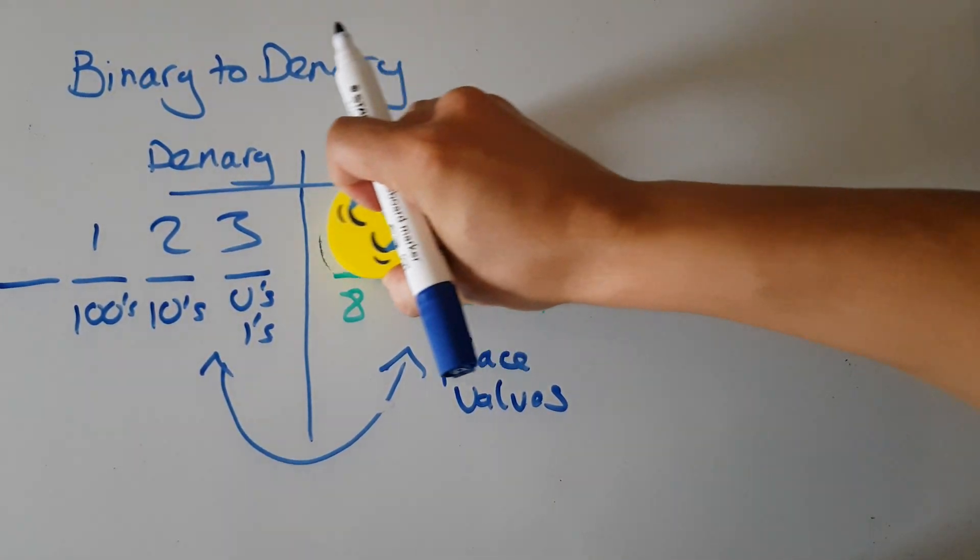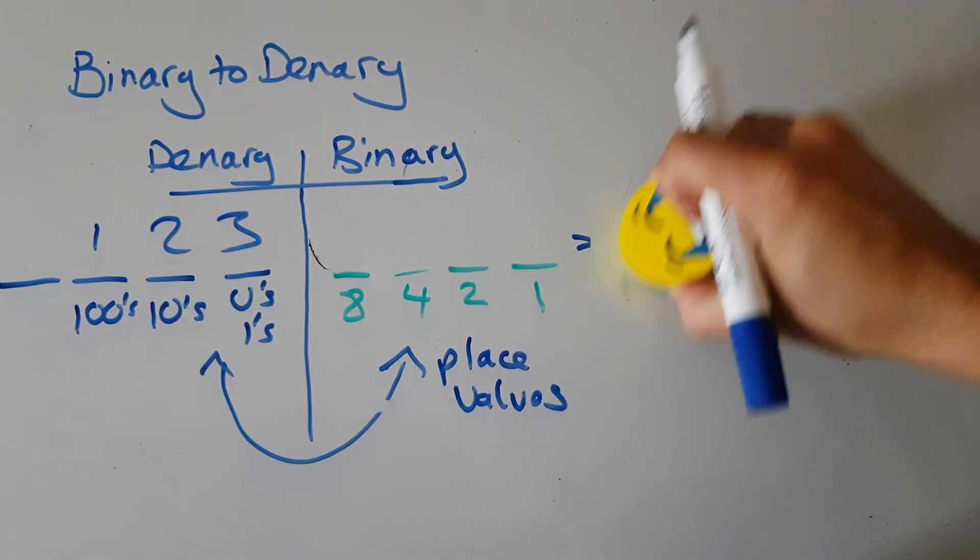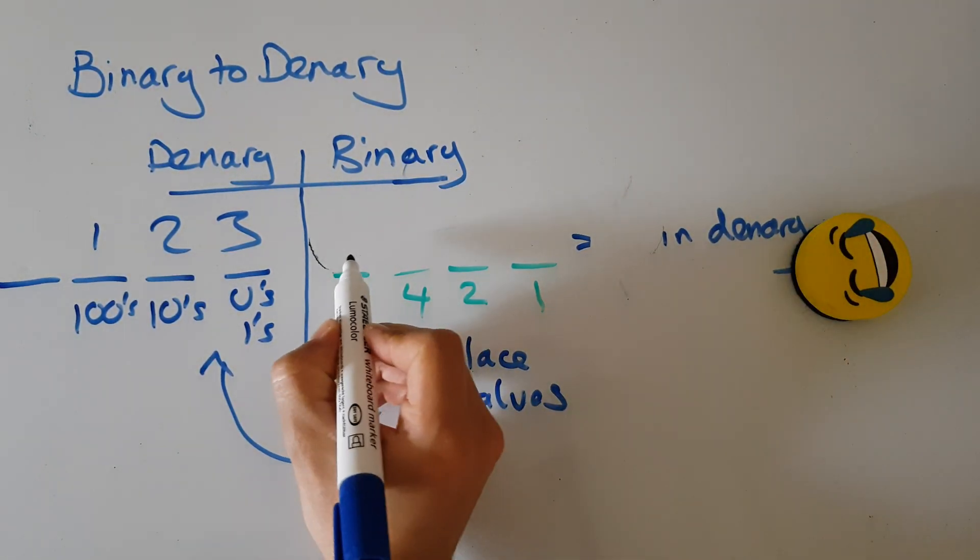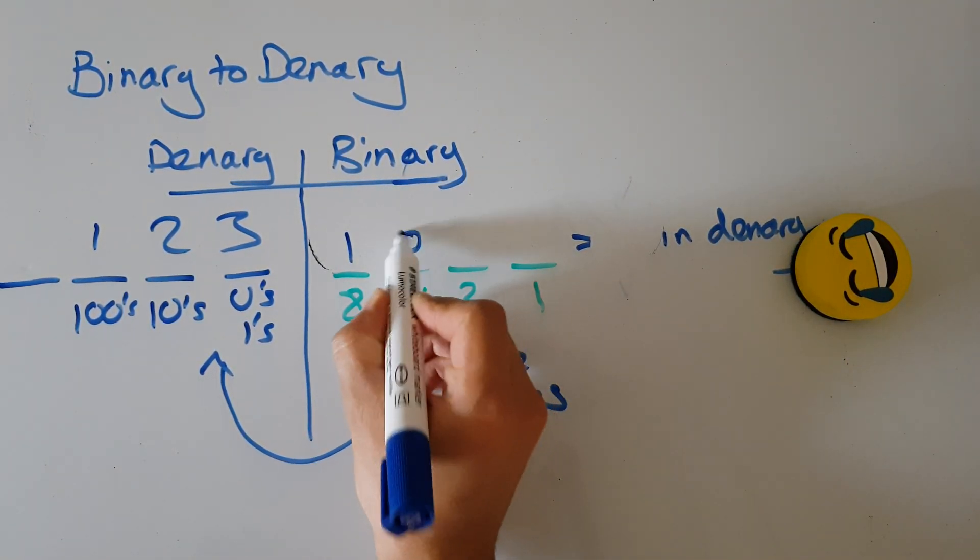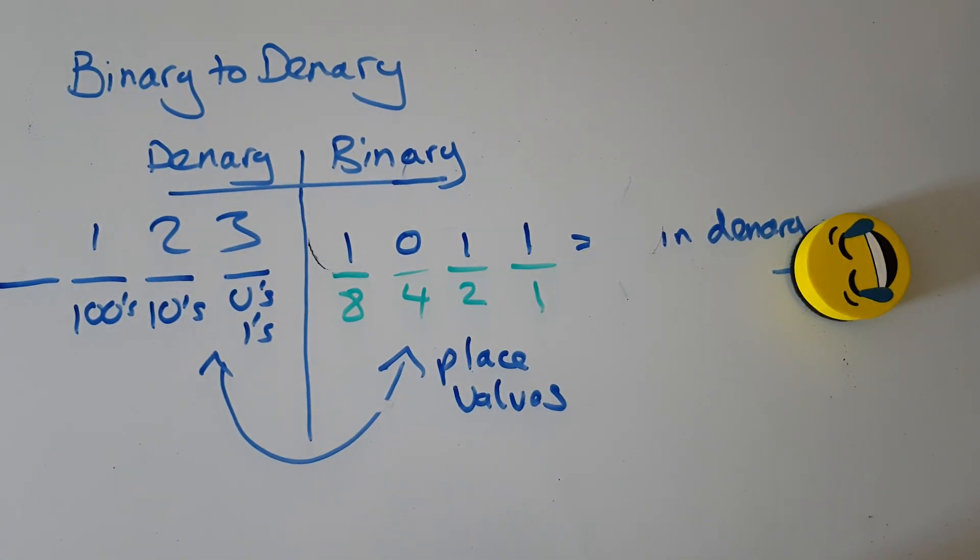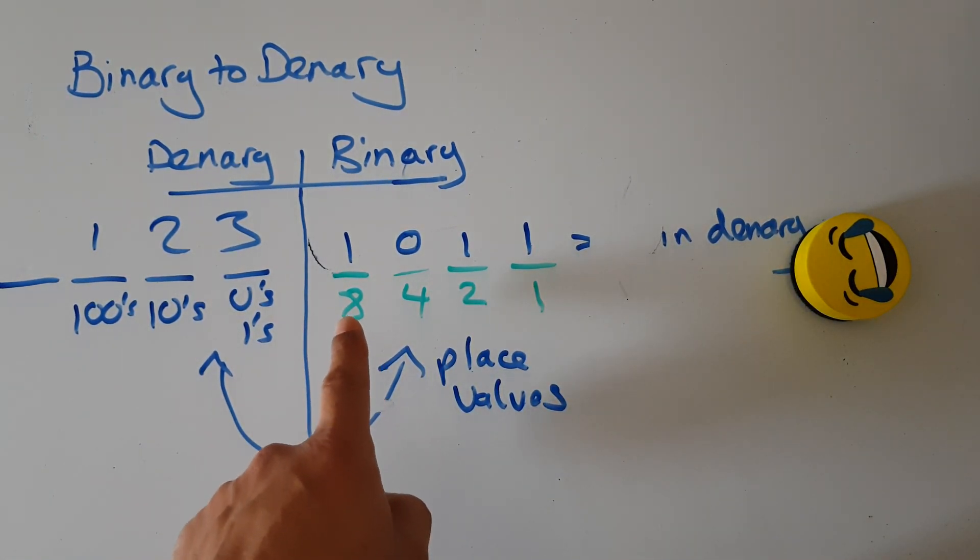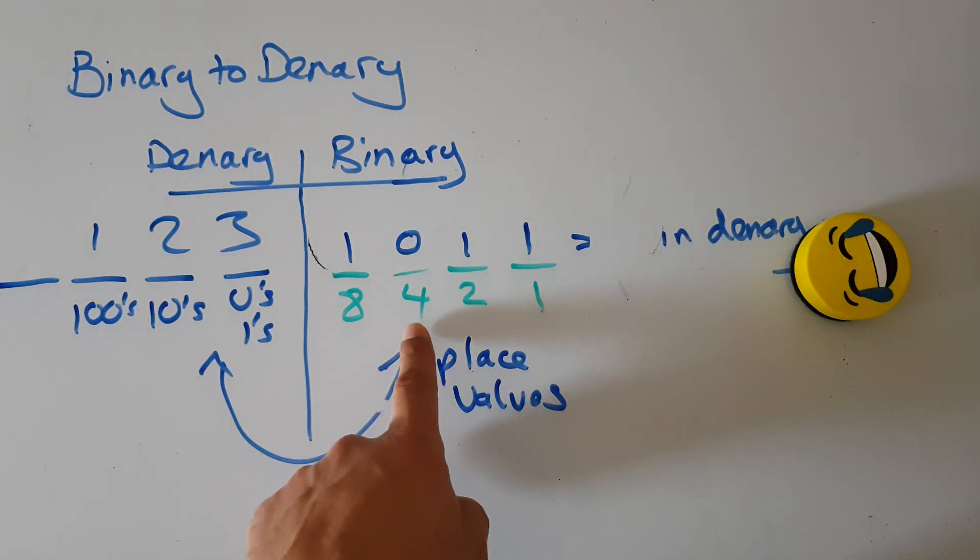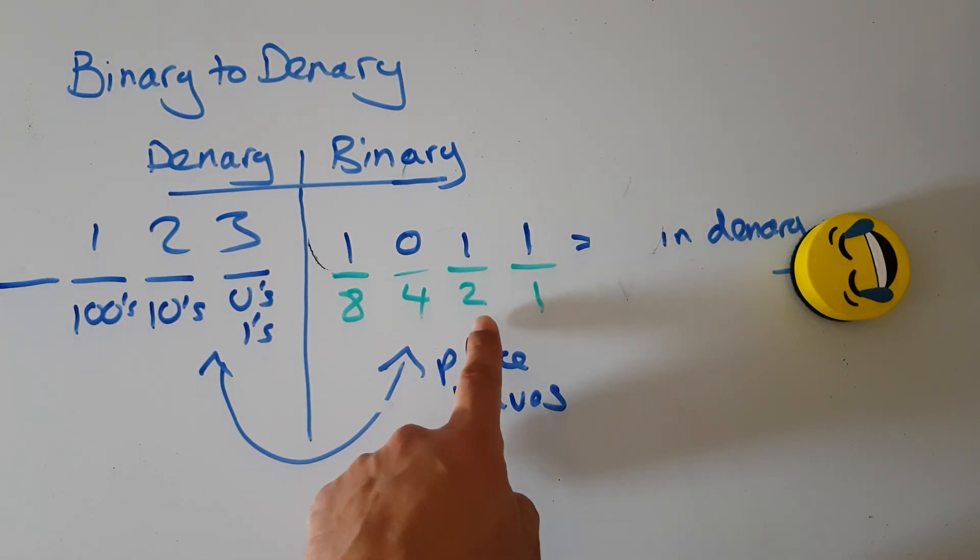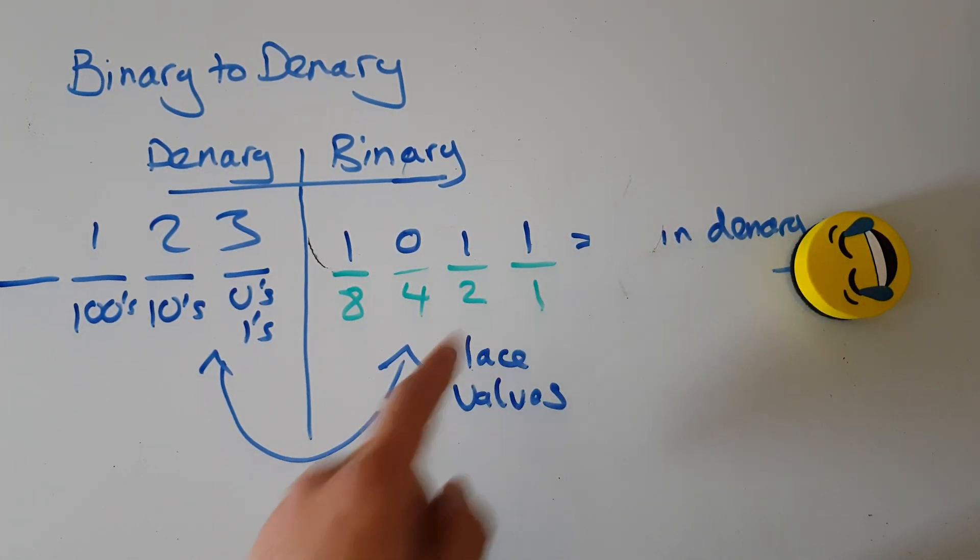Let's try a really hard one. Let's go with 1011. Let's see. Well, I've switched on the eight. I haven't got four, so I ignore that. Eight plus two plus one - eight plus two is ten. Well, that's eleven.